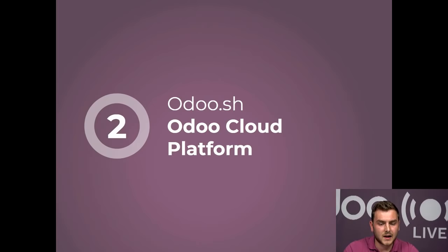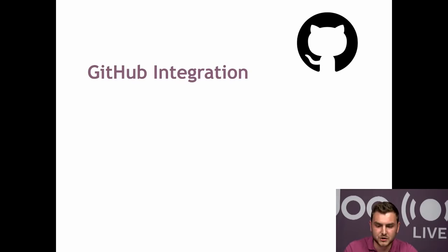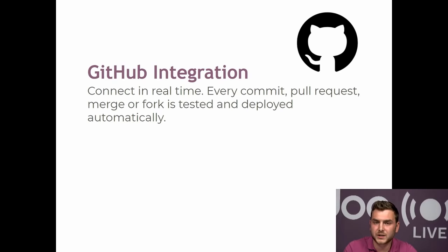Now let's talk about Odoo SH specifically and what the different functionalities are. First, an important point: Odoo SH is fully integrated with GitHub, which is a very powerful feature. This means you can connect to your platform, connect to your branch, and connect to any database in real time. Every commit, every pull request, every merge or fork is immediately tested and deployed automatically. This might sound complex, but during the next slides and the demonstration it should become clearer.